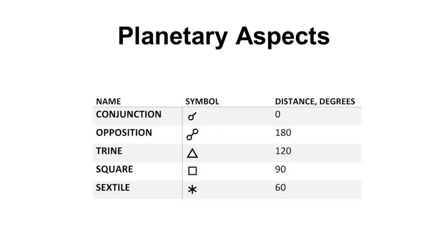Planetary aspects reflect the chart positions of two planets relative to each other, that is, the angular distance. The allowable span of the position is called the orb.